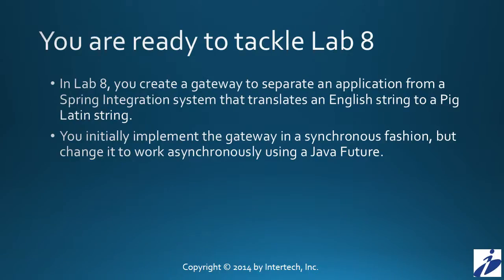Now you've learned about gateways in Spring Integration, and I think you're ready to tackle lab number eight. Our final lab in this tutorial series will allow you to check out gateways as we look at gateways to make calls into a Spring Integration system that is going to use a Pig Latin translator, taking a look at strings being transformed from English to Pig Latin through a Spring Integration transformer. You initially implement that gateway as a synchronous gateway, but later in the lab you'll change it to be asynchronous, using the Java Future object to make that work.